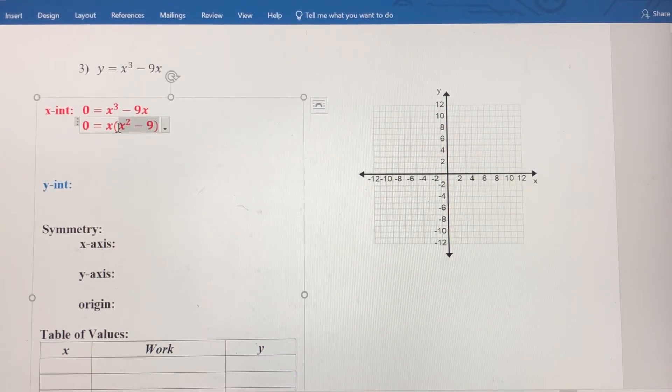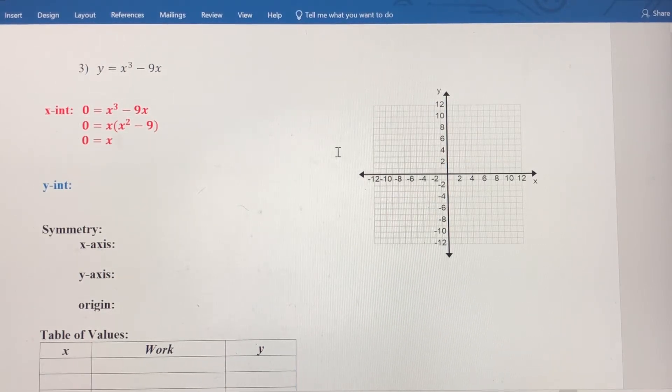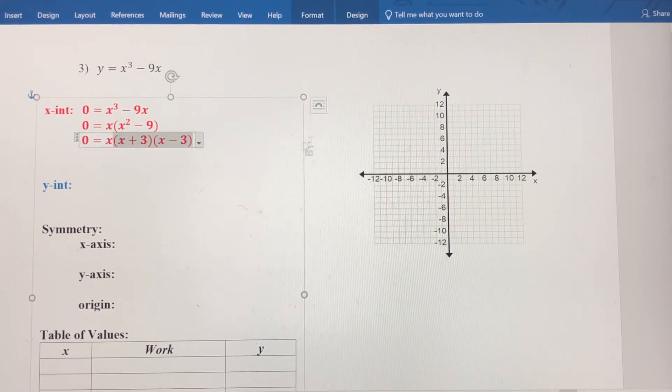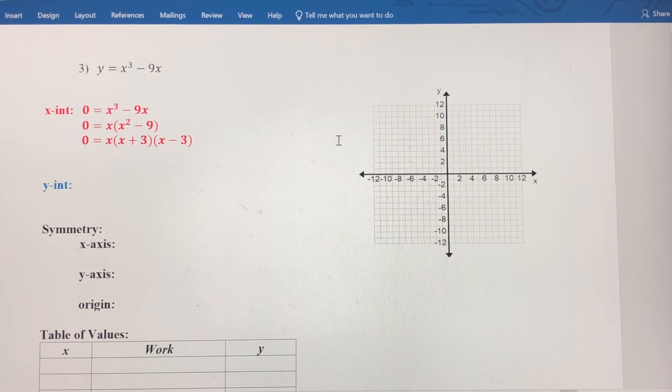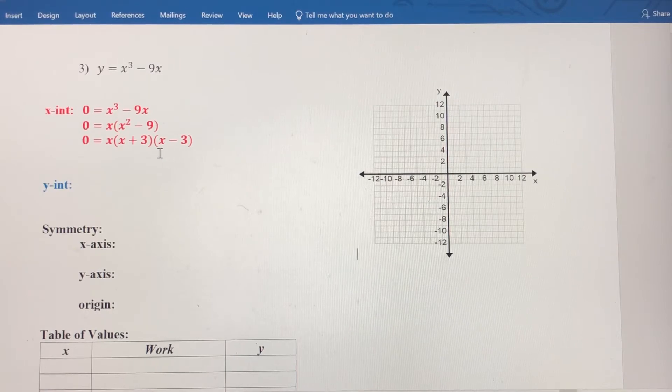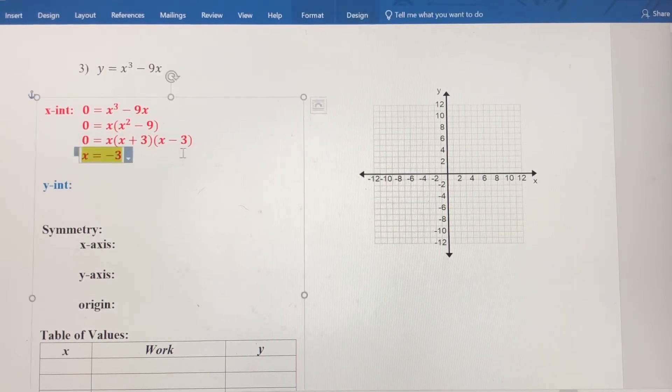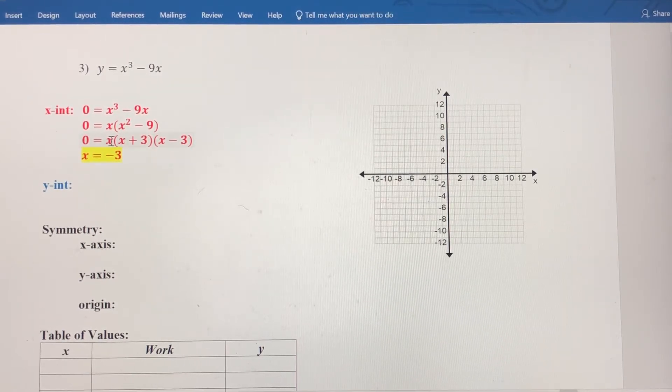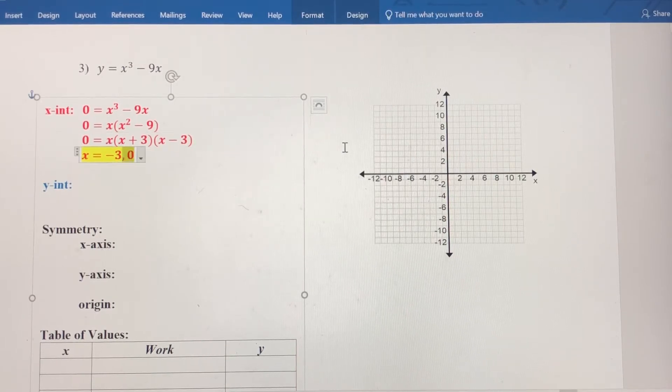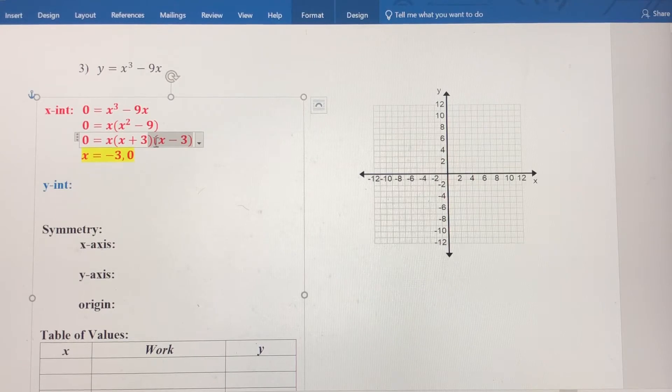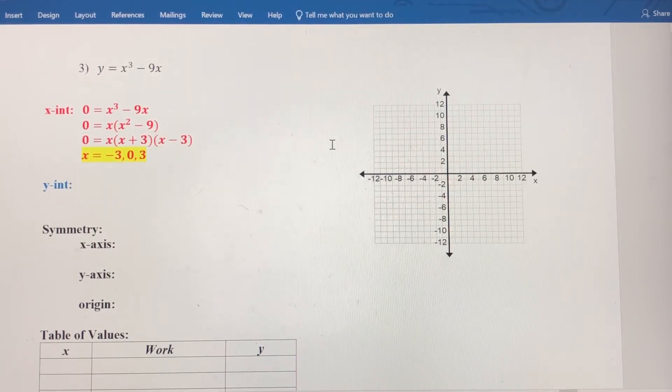Now hopefully you recognize that this is one of those special patterns we can factor, called a difference of squares. So I've got 0 equals x, and then I can factor x squared minus 9 as x plus 3, x minus 3. So what this means is I'm going to have three x-intercepts, and I'm going to go in order from smallest to largest. So if I solve this, if I set this factor equal to 0 and solve, I get negative 3. If I set this factor equal to 0, I get my second x-intercept of 0, and if I set this factor equal to 0, I get a positive 3. So my three x-intercepts are at negative 3, at the origin, and at 3.